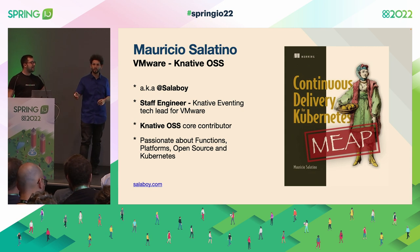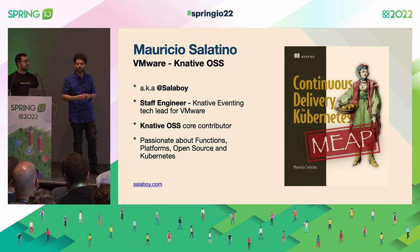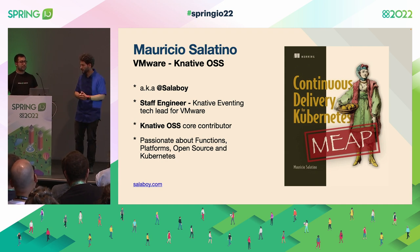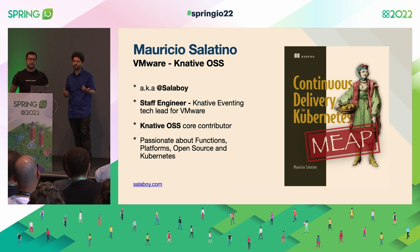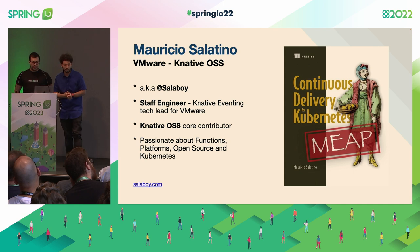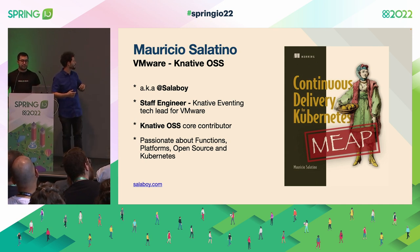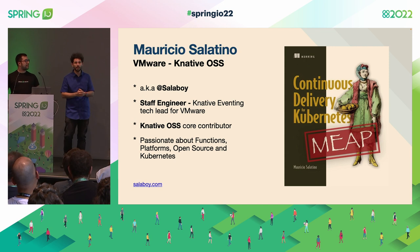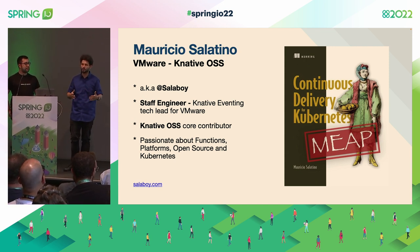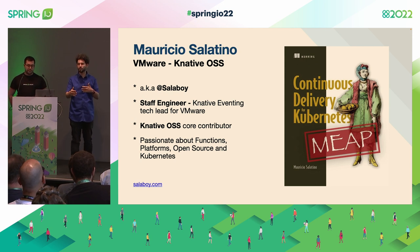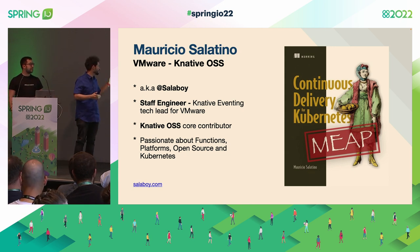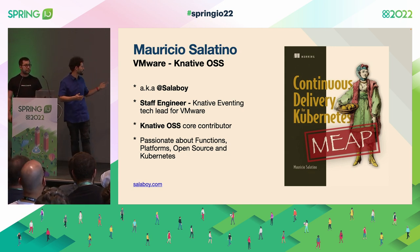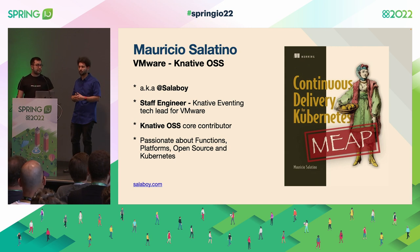My name is Mauricio Salatino. I work for VMware, full-time working on a project called Knative — something that will help you if you are targeting and using Kubernetes. I'm a strong believer that you should have Knative installed if you're using Kubernetes, because it will save you a lot of time. You can follow me on Twitter at Salaboy. I'm also writing a book called "Continuous Delivery for Kubernetes", covering how you can be more efficient when delivering software into Kubernetes and what tools you should be looking into. I'm really passionate about Knative in general and functions.